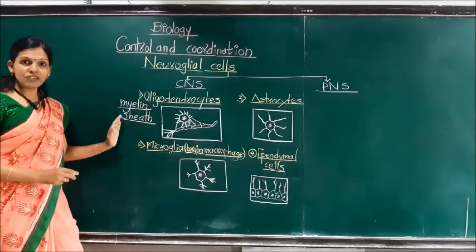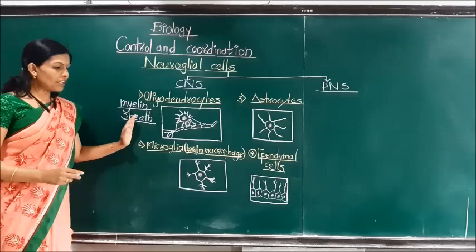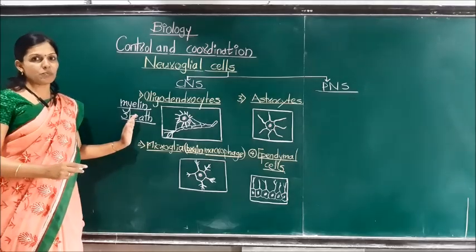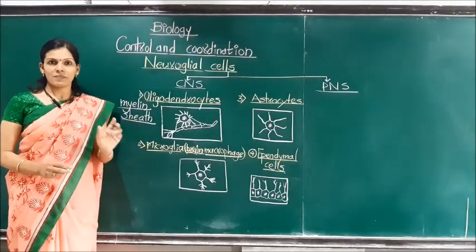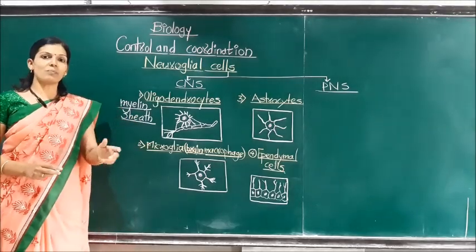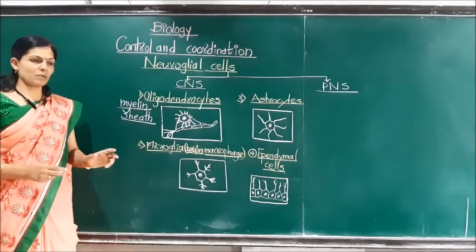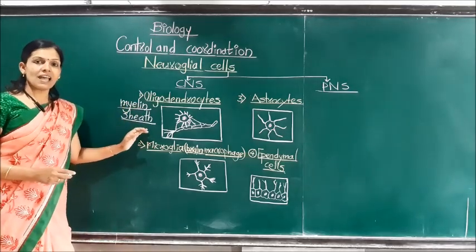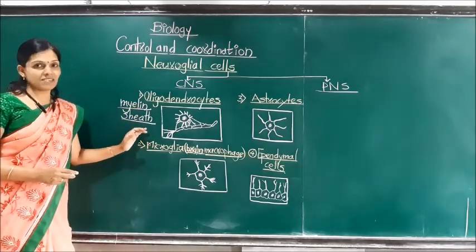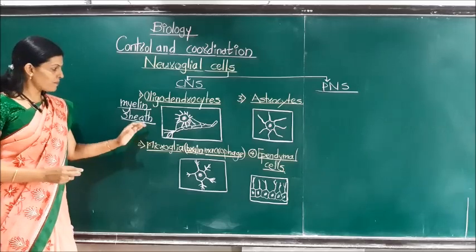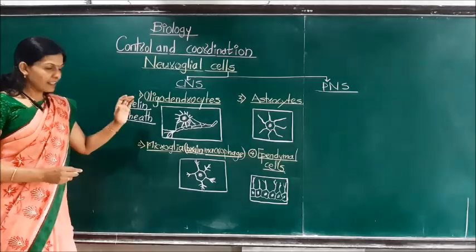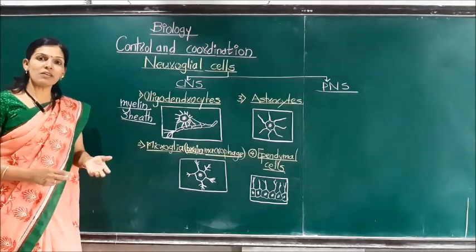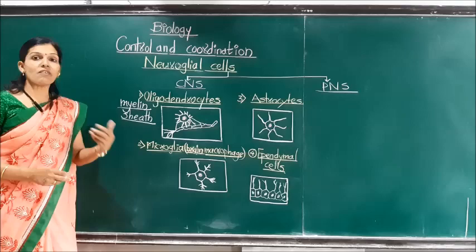What is this myelin sheath? It is an insulating sheath which is present on the axon — the axon being a part of the nerve fiber. This myelin sheath is made up of proteins as well as fatty substances, and it helps in the transmission of nerve impulse very rapidly.